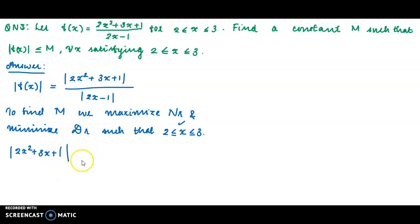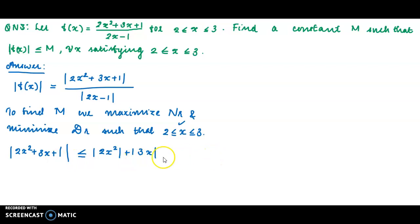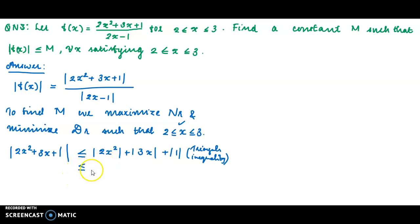For the numerator, we apply the triangle inequality: modulus of a plus b is less than or equal to modulus of a plus modulus of b. So modulus of 2x squared plus 3x plus 1 is less than or equal to modulus of 2x squared plus modulus of 3x plus modulus of 1, which gives us 2 times modulus of x squared plus 3 times modulus of x plus 1.